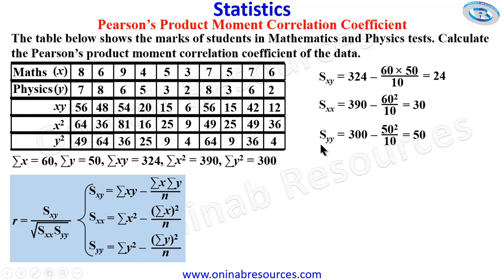So having gotten this, we then go ahead to find our Pearson's product moment correlation coefficient represented by R in this formula. So we have R.